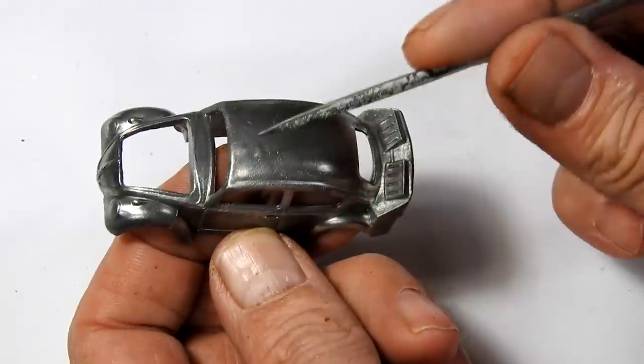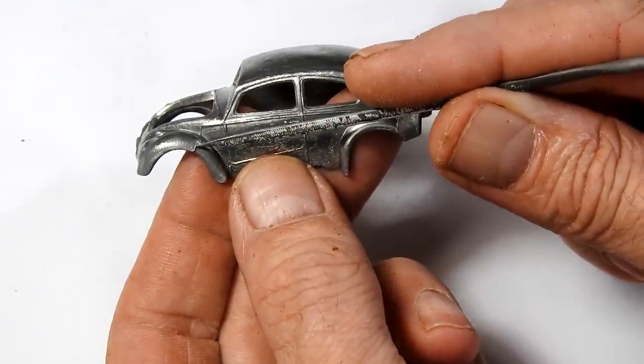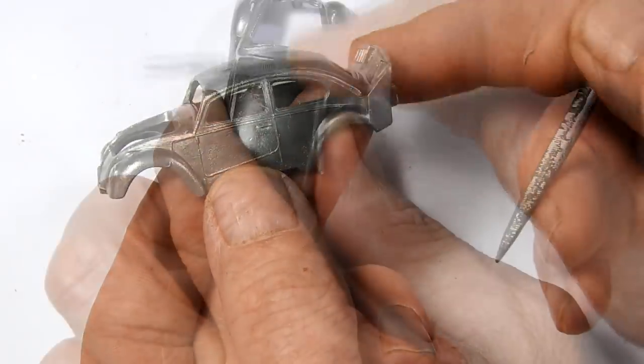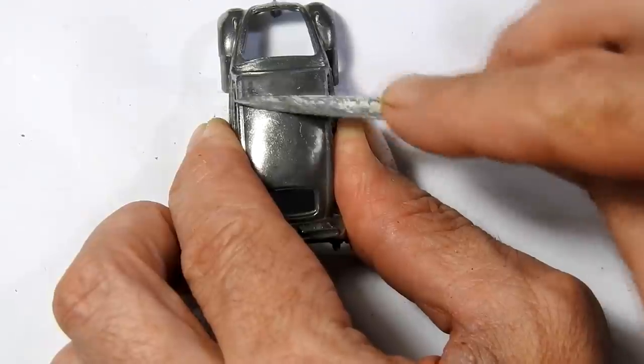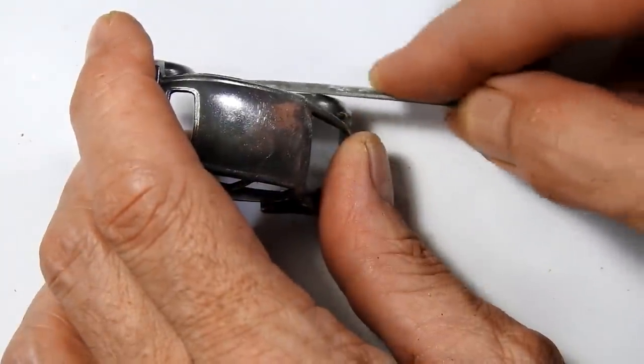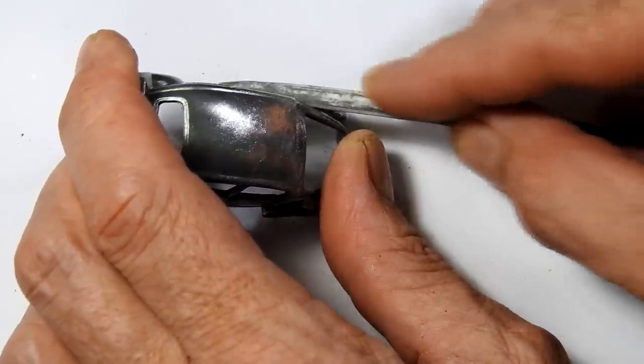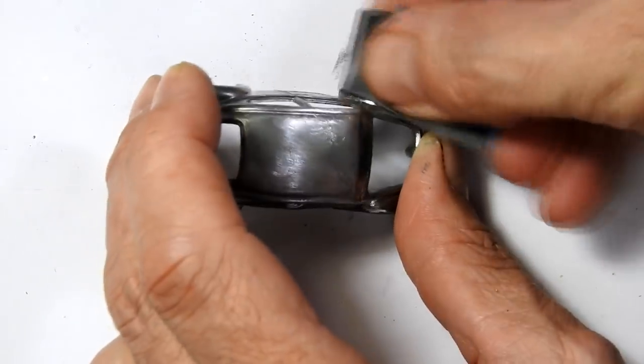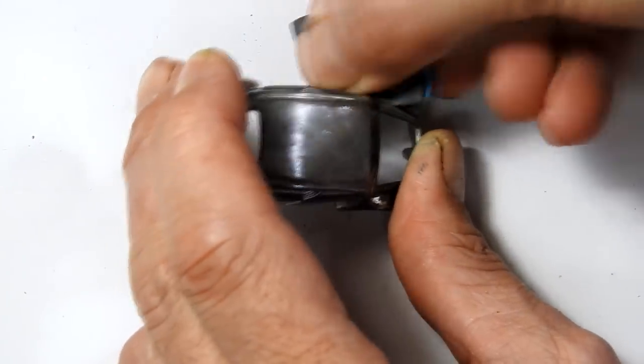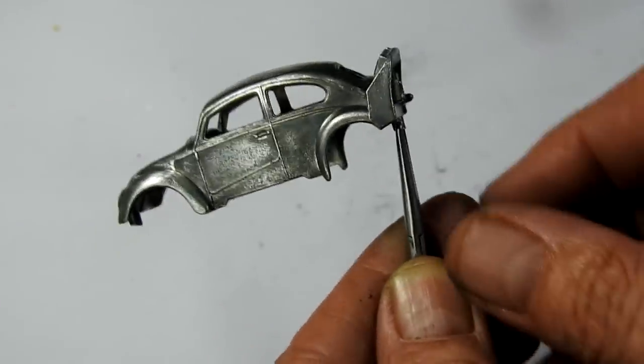There are a couple of flaws on the car body—a lump on the roof there and some quite noticeable casting lines on the front fenders. So I use a needle file and some sandpaper to tidy those up. Here's our car body casting ready for some paint.